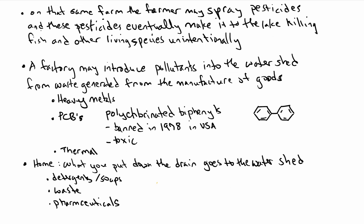On that same farm, the farmer may spray pesticides, which are chemicals sprayed to kill insects. These pesticides eventually make it to the lake, killing fish and other living species. The farmer was just wanting to raise his crops, but a side effect is that it killed the fish down in the lake.